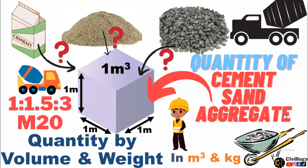Hello guys, welcome to my channel. In this video, we are going to calculate the quantities of cement, sand and coarse aggregate to cast a 1 cubic meter formwork by using the ratio 1:1.5:3, which must have a strength of 20 MPa.